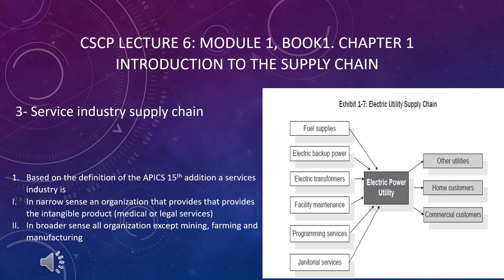Now look at Exhibit 1-7, the utility supply chain. An electric power utility is basically a manufacturer of electricity — a power plant that gives its electricity to other utilities, home customers, and commercial users. It has its own suppliers: someone providing its fuel, for example gas or petrol, so it has fuel suppliers, electric backup suppliers like electric transformers, facility maintenance, programming services like software services, and janitorial services for daily operational needs.